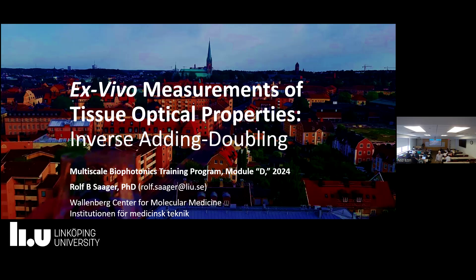We'll keep this a little bit more relaxed and informal, so interrupt and heckle from the back — or from the front. What we're going to start to do is, up to this point you've been talking a lot about modeling and forward models and how to simulate different things. When you come into an experimental situation, usually it's this other thing where you want to now try to figure out what the optical properties are — not what would a model simulate if given a certain set of optical properties. This is one of the first, simplest approaches to actually start to measure what absorption and scattering are from tissues.